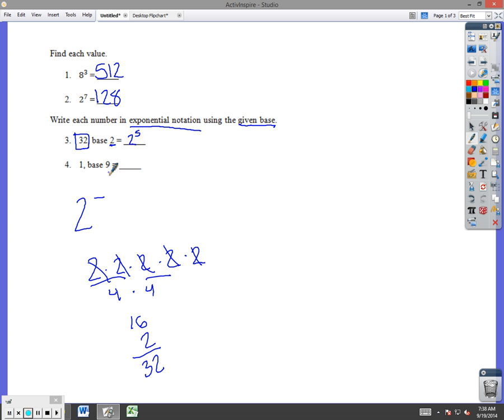Now we have 1, base 9. I need the problem to equal 1. Now, if you recall, if I did 9 to the first, that equals 9. 9 to the 0 power, or for that matter, anything to the 0 power is equal to 1. So this would be 9 to the 0 power.